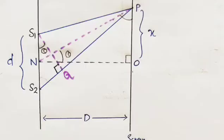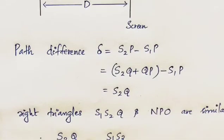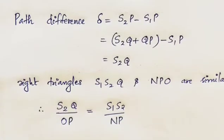We consider NO to be approximately equal to capital D. We also consider S1S2 approximately equal to d. By the similarity of triangles, S2Q divided by S1S2 equals NP divided by NO, giving S2Q = (d/D)·x, so delta = (d/D)·x.